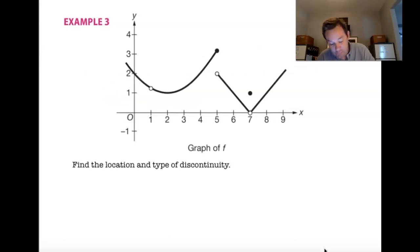Let's do one more. Find the location and type of discontinuity here. So, we're going to have three discontinuities. At X equals 1, we have a hole. So, we can call that a removable discontinuity.